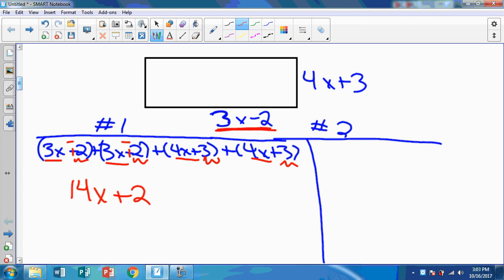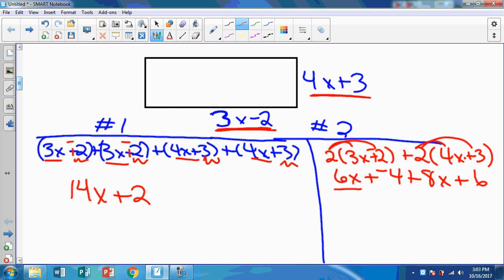Or we know that I need two of these, and I need two of these. So I could take 2 times 3x minus 2, plus 2 times 4x plus 3. We're really getting into some good algebra here. Pretty exciting, huh? 2 times 3 is 6x. 2 times negative 2 is negative 4. And then I can distribute over here: 8x plus 6. 6x plus 8x is 14x. Negative 4 plus positive 6 is 2. And look at that, we get the same answer either way.